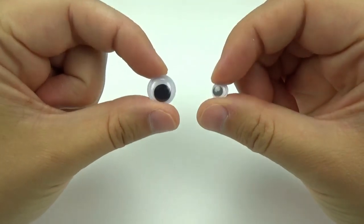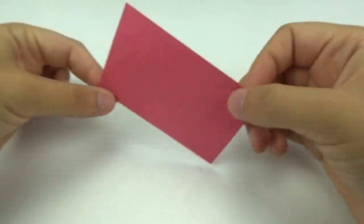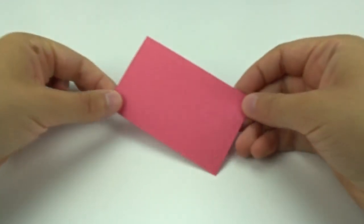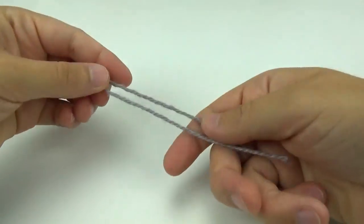two different sized googly eyes, some white modeling clay or play-doh, a small piece of red construction paper, an itty bitty rainbow sticker, some gray yarn.